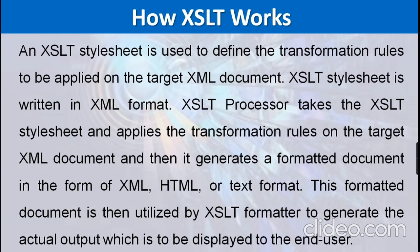In XSLT, when transformation rules are created to be applied to an XML document, whichever XML document we apply the transformation rule to becomes the target XML document. The rules we frame in the XSLT document must be saved with the dot XSL or dot XSLT extension. When we reference that XSLT file into the target XML document, whatever data is in that target XML document is going to change and can be displayed as formatted.